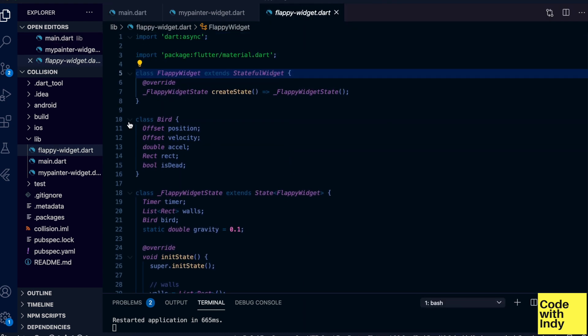So, here I've defined the bird object. It has these properties. A position, velocity, acceleration. I will get to that later. And a rect which describes the bounds of the bird, and the flag to say if it's dead or alive.